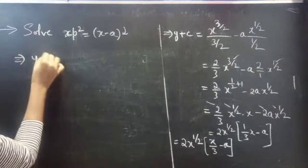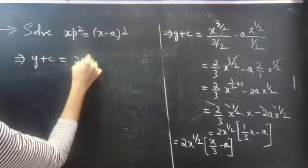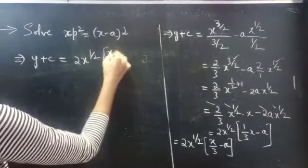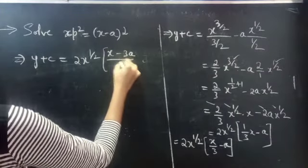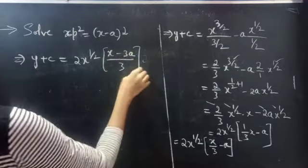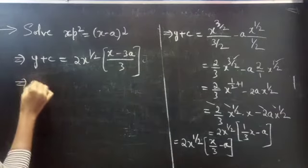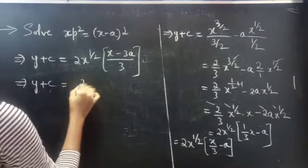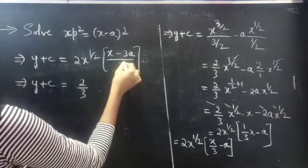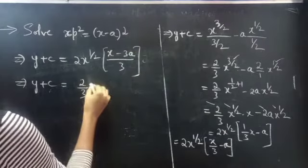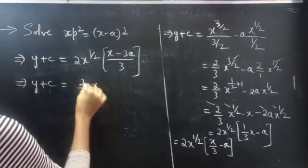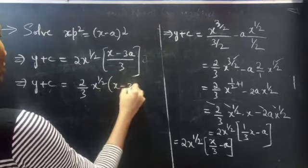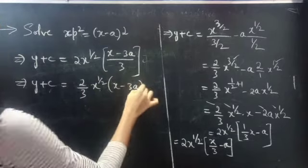Then y plus c equals 2 into x power 1 by 2 into (x minus 3a) by 3. Taking 1 by 3 outside, y plus c equals 2 by 3 into x power 1 by 2 into (x minus 3a).